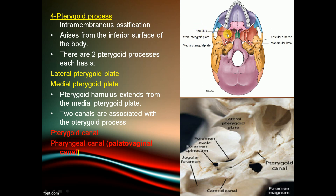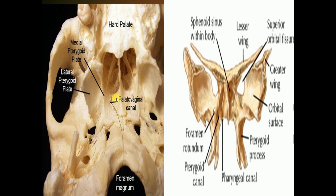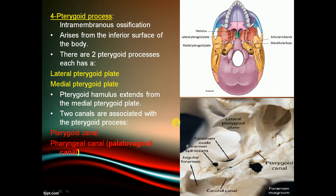The pterygoid hamulus extends from the medial pterygoid plate. Two canals associated with the pterygoid process are the pterygoid canal and the palatovaginal canal.